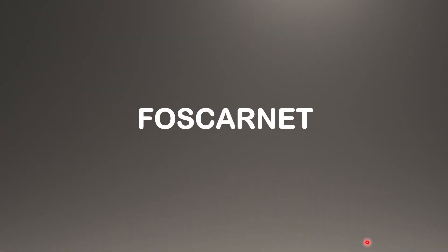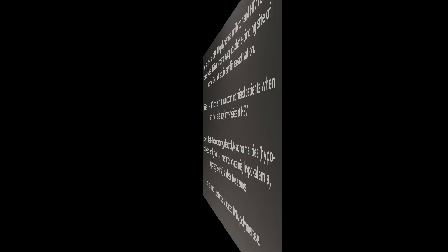Next drug — foscarnet. It is a viral DNA and RNA polymerase inhibitor and HIV reverse transcriptase inhibitor. It binds to the pyrophosphate binding site of the enzyme and, unlike previous drugs, does not require kinase activation. It is used in CMV retinitis in immunocompromised patients when ganciclovir fails, and in acyclovir-resistant HSV infections. Important adverse effects include nephrotoxicity, electrolyte abnormalities such as hypo- or hypercalcemia, hypo- or hyperphosphatemia, hypokalemia, hypomagnesemia, and seizures. Resistance develops through production of mutated DNA polymerase.